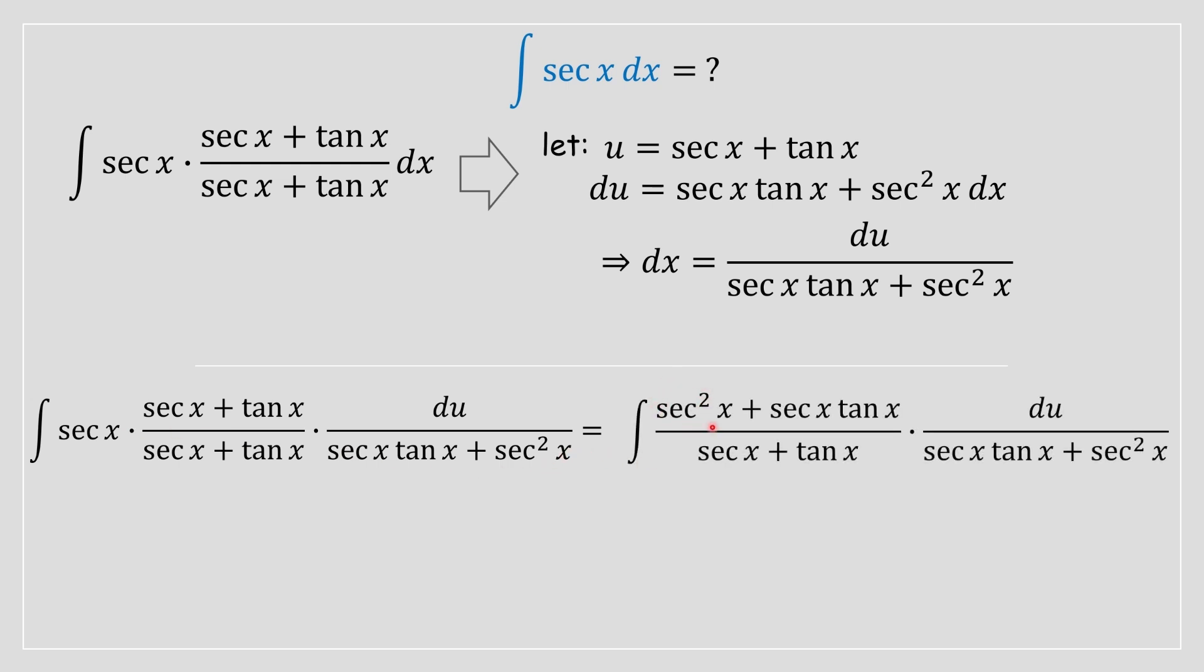From here, we can cross out a term. sec x, sec squared x plus sec x tan x is going to cancel in the numerator and denominator respectively. That's a lovely canceling that's going to take place.